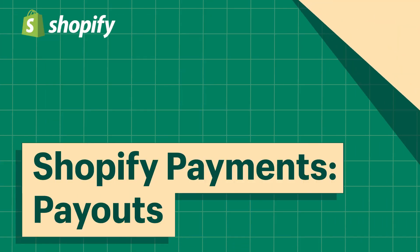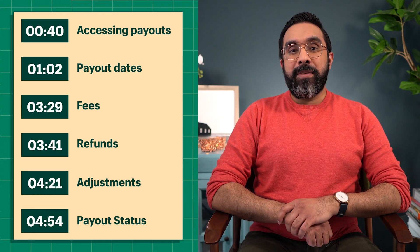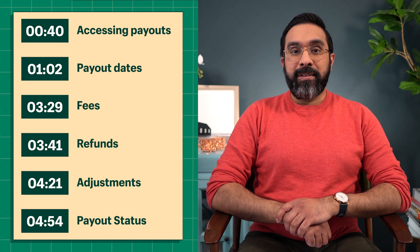Shopify Payments is the simplest way to accept payment from customers. But you might be wondering, how do I get paid? Payouts are how Shopify Payments sends money made from your sales to your bank account. You'll only receive payouts through Shopify for orders paid using Shopify Payments. If your customer is using an alternative payment provider like PayPal, the money for these orders will be available through those third-party gateways. Make sure to check the Terms of Service for these providers for further details.